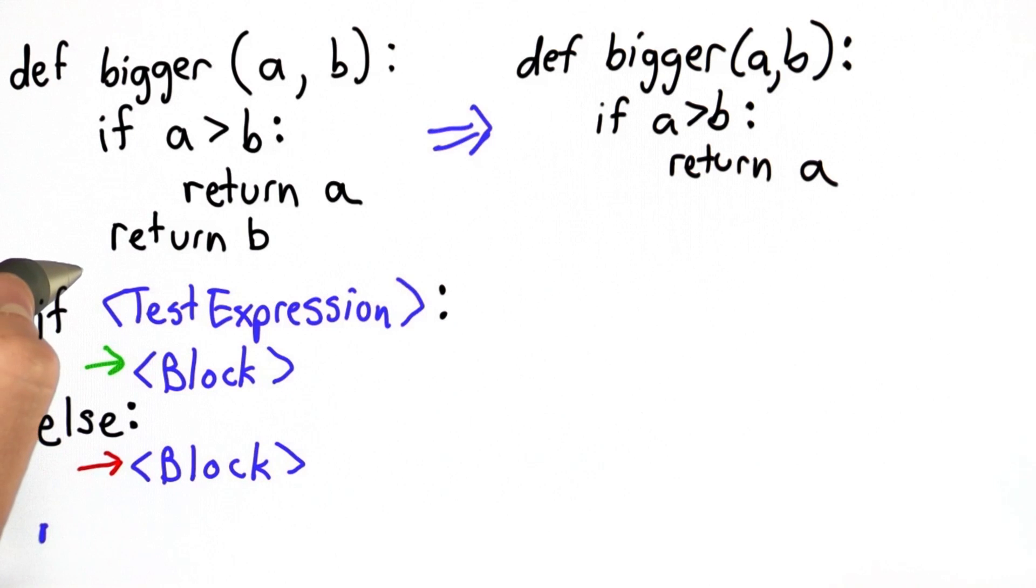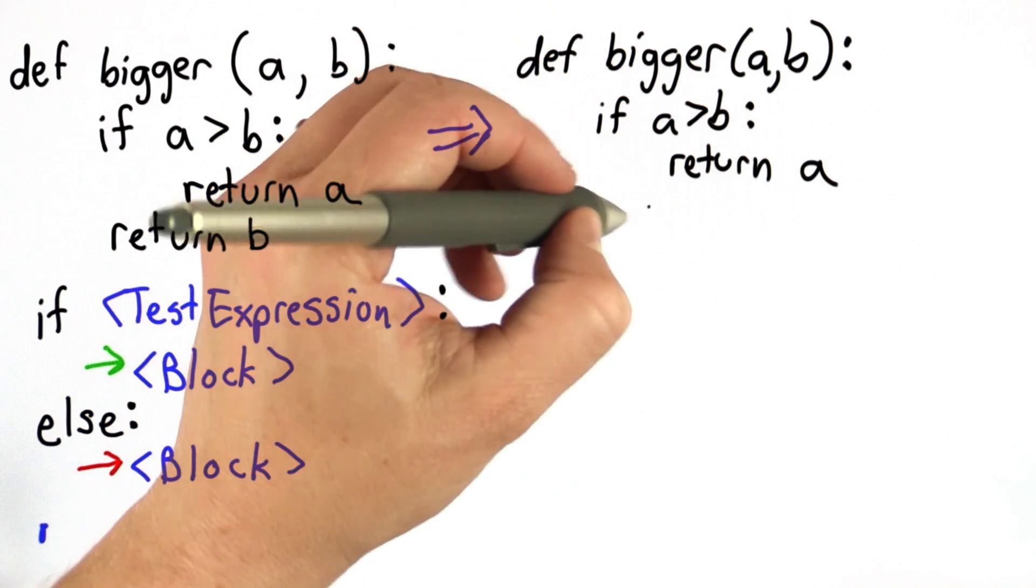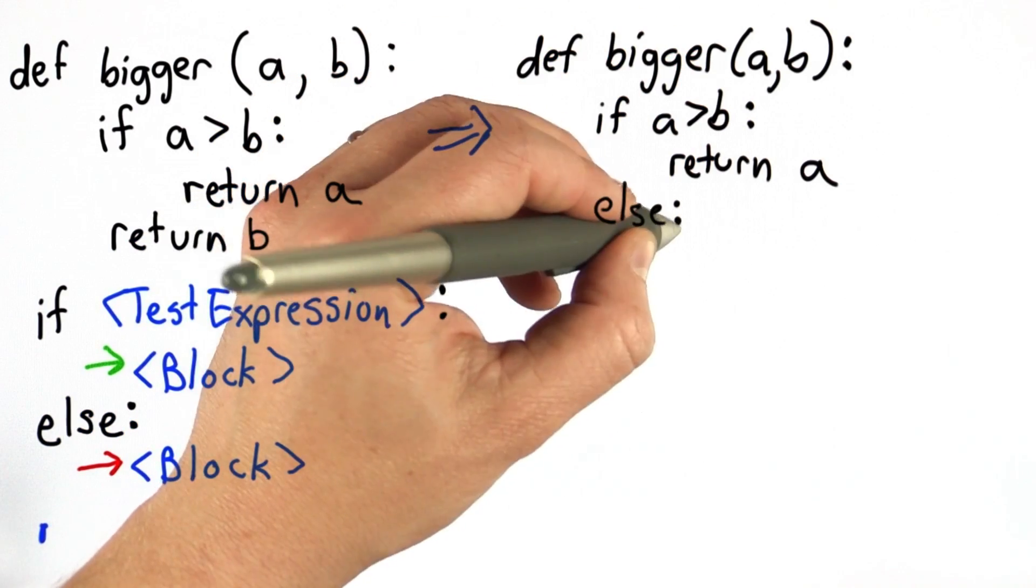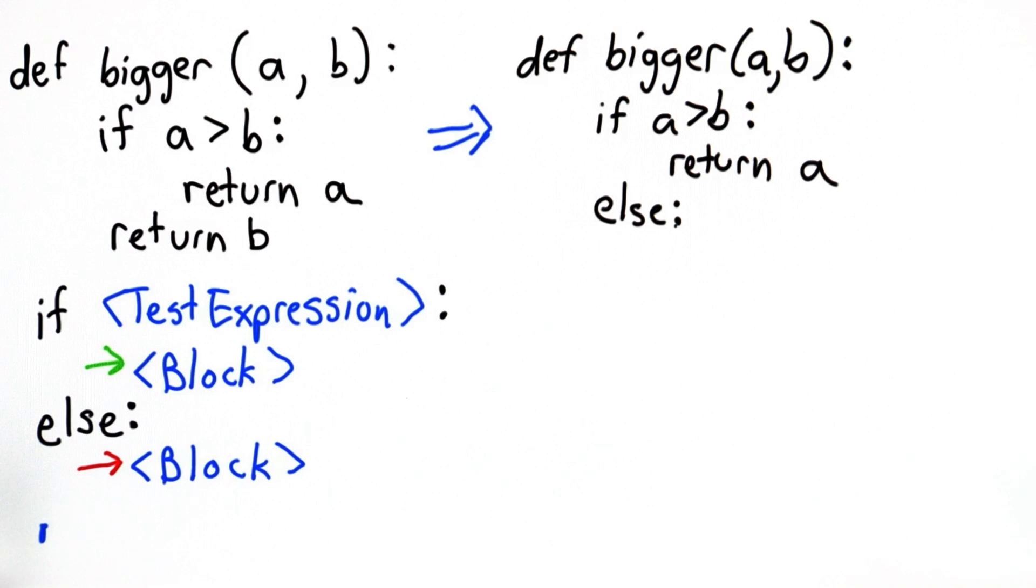Instead of having the next statement return B, we're going to think about having an else clause that says, well, if A was not greater than B, what should we do? If A is not greater than B, then B is either the same size or bigger. And what we want to do is return B.